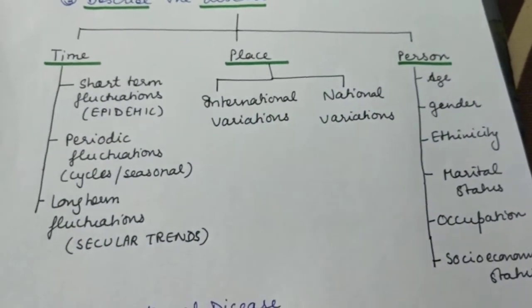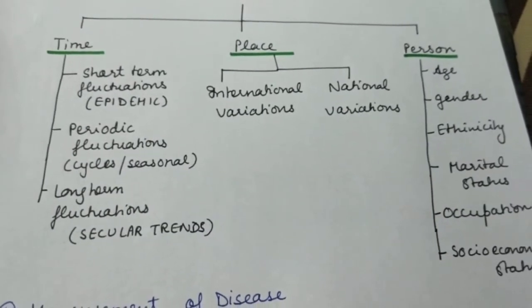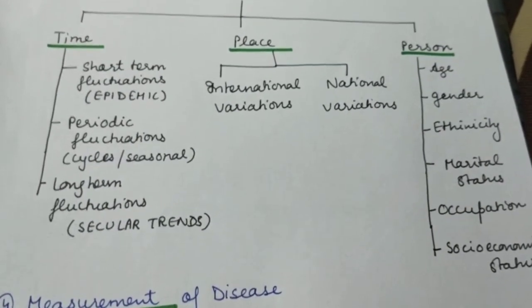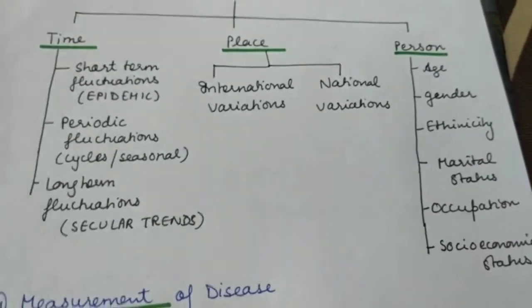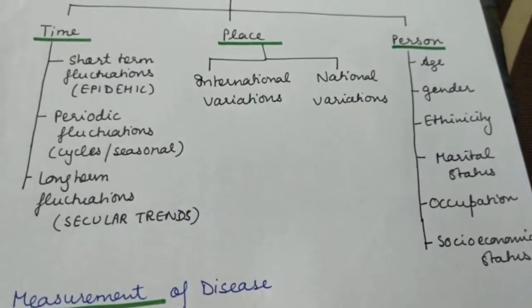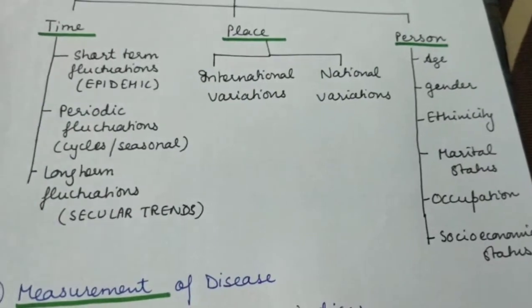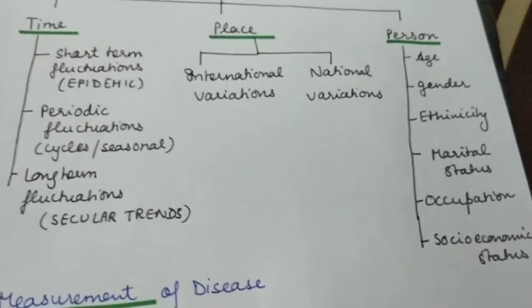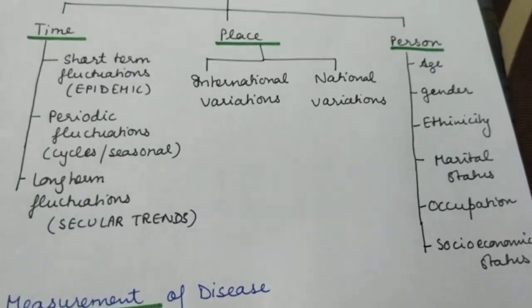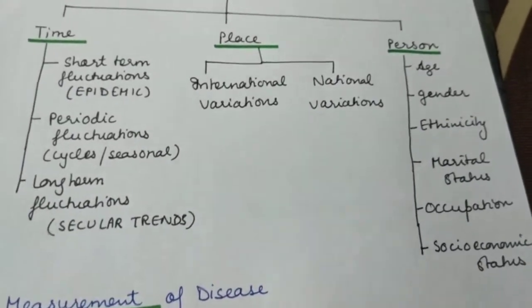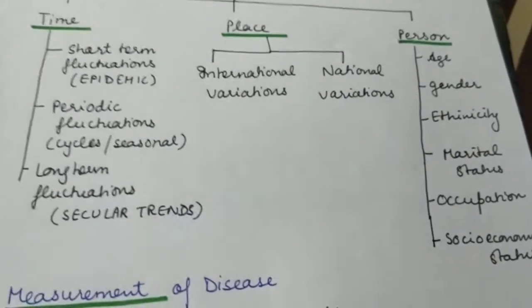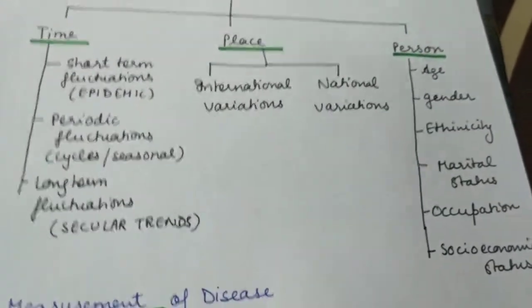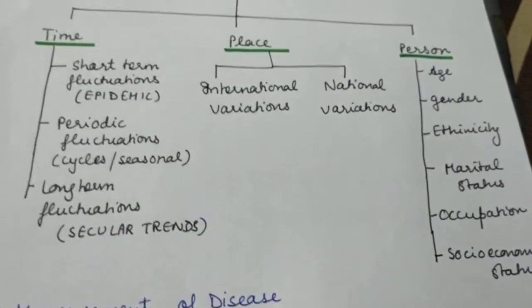An epidemic is a sudden rise in the number of cases which is clearly in excess — greater than 80% or greater than two standard deviations more than the expected occurrence. When a disease occurs more than its expected occurrence in previous years, it is said to be an epidemic. It is the unexpected occurrence of a disease, and the unexpectedness should be more than two standard deviations of the expected frequency.